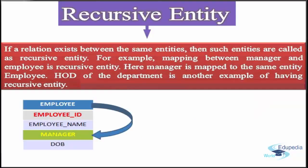Next is the recursive entity. If a relationship exists between the same entities, then such entities are called recursive entities. For example, the mapping between a manager and an employee is a recursive entity — the manager is mapped to the same entity as the employee. Head of a department is another example. An employee who can be a manager depicts an example of a recursive entity.